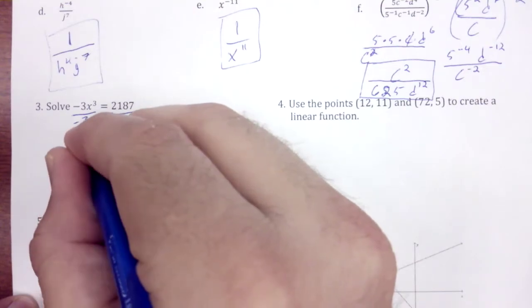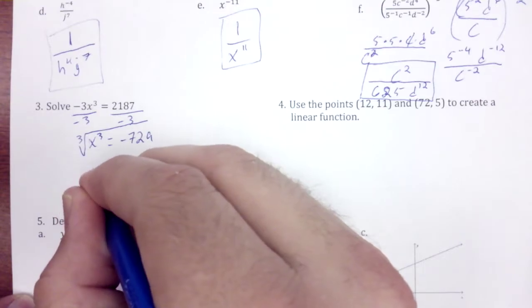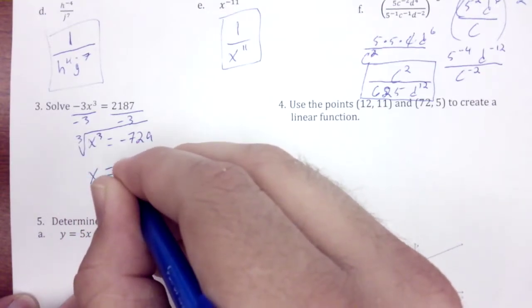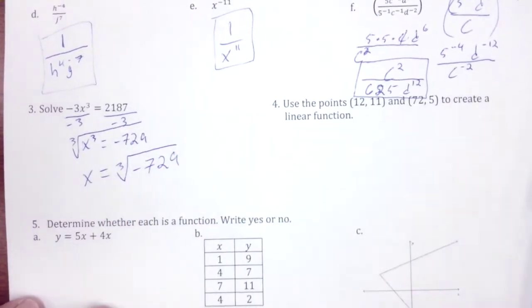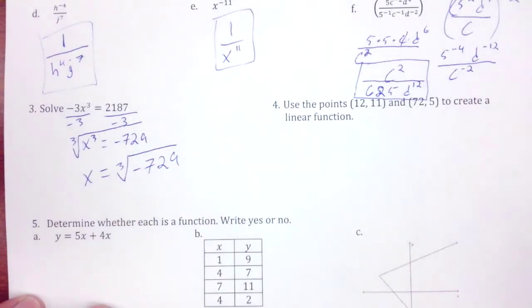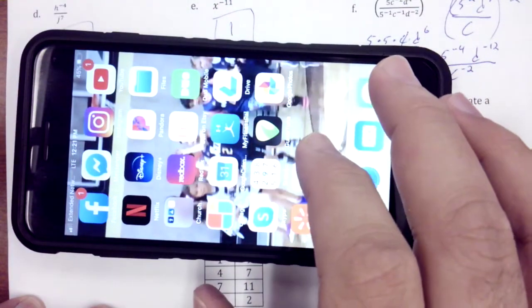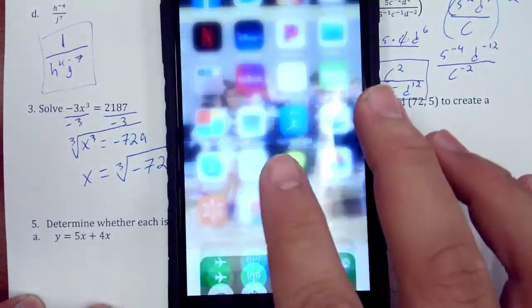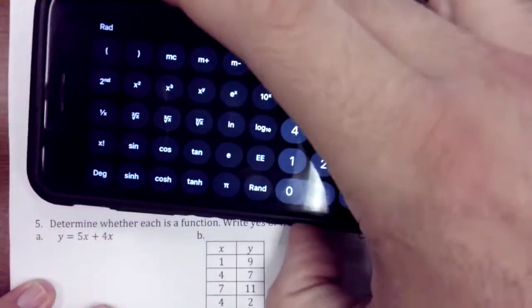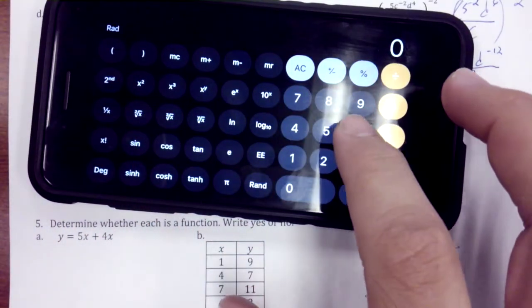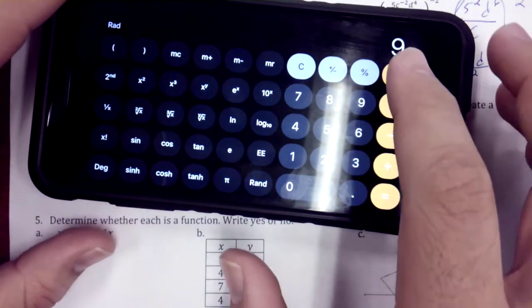Okay, I'm going to take a cube root of both sides. I'm left with x is equal to the cube root of negative 729. I'm going to get into my calculator. We're going to do cube root of 729 gives us 9.